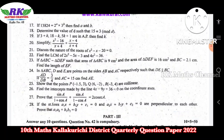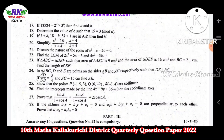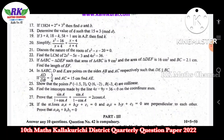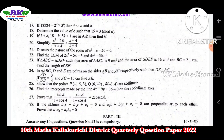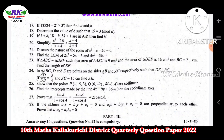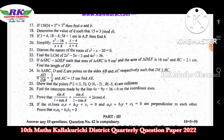Question number 23 is the area of similar triangles concept. The area ratio equals the ratio of corresponding sides squared. That is the concept for question number 24, which is Thales' theorem — the basic proportionality theorem.